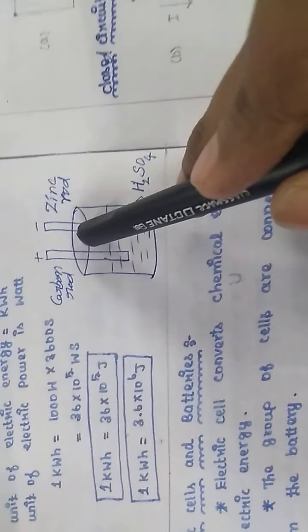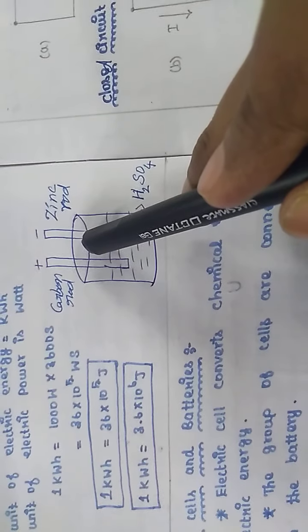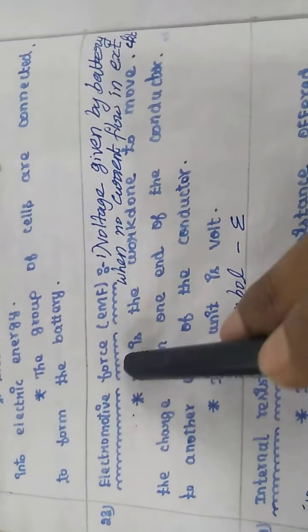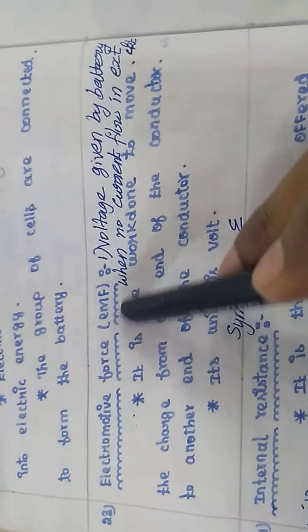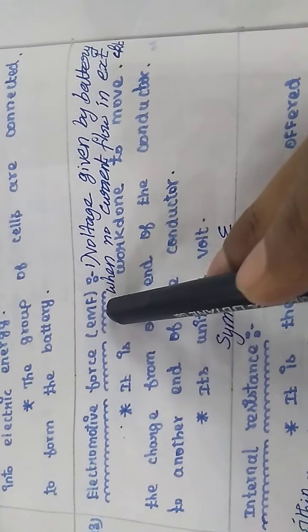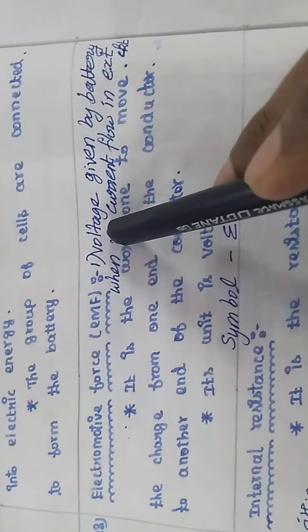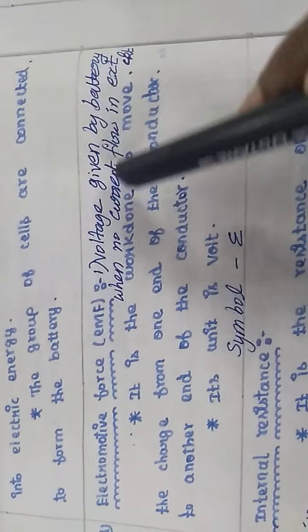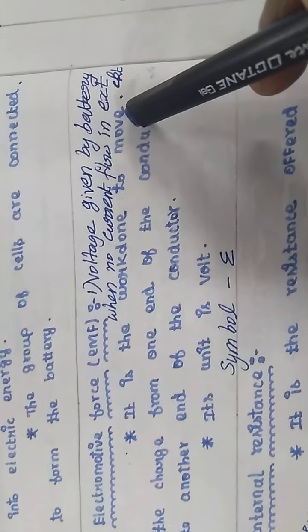Now, with this simple electric cell, we introduce the concept of EMF — the electromotive force. What is the electromotive force? It is the voltage given by the battery when no current flows in the external circuit.